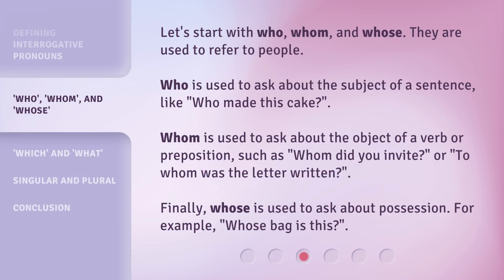Let's start with Who, Whom, and Whose — they are used to refer to people. Who is used to ask about the subject of a sentence, like, 'Who made this cake?' Whom is used to ask about the object of a verb or preposition, such as 'Whom did you invite?' or 'To whom was the letter written?' Finally, Whose is used to ask about possession. For example, 'Whose bag is this?'